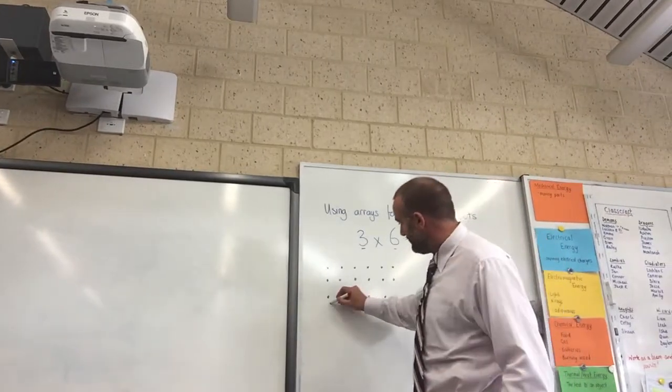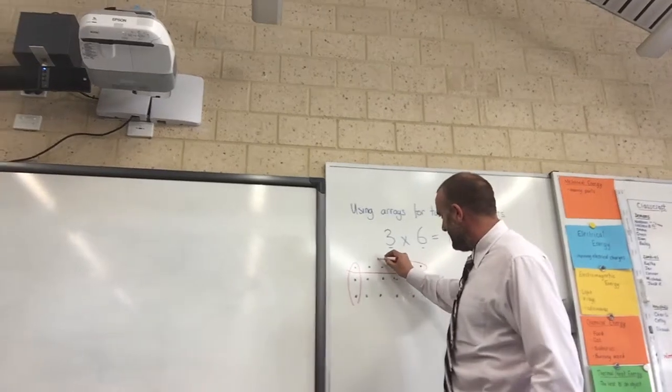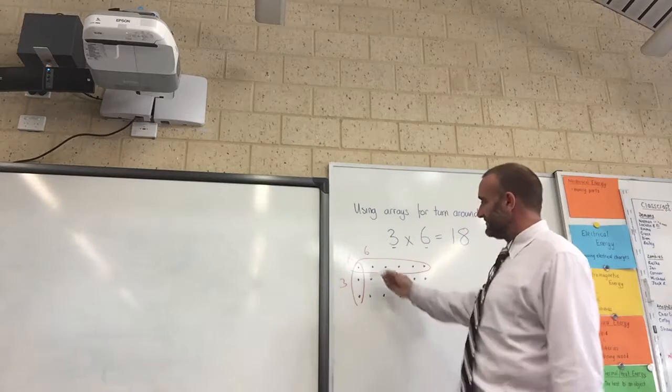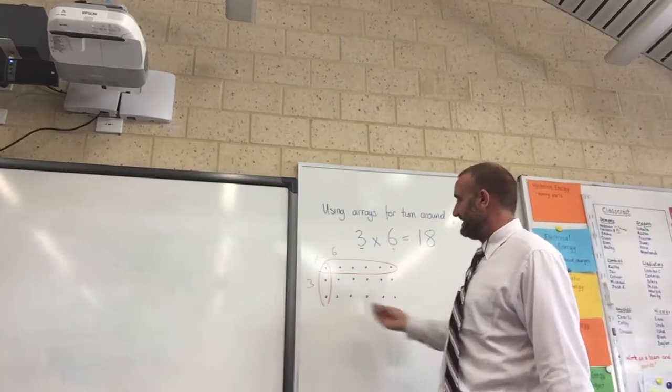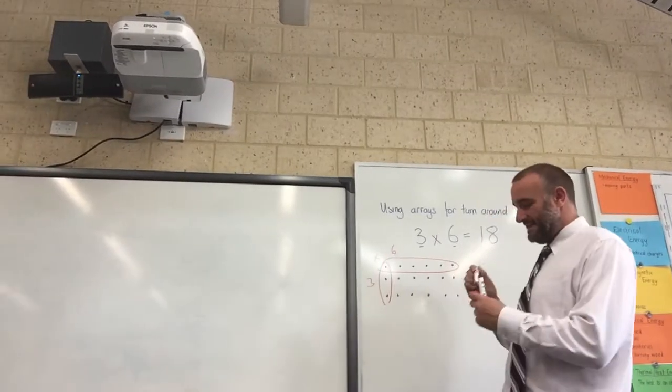And if we remember, that would be 3 multiplied by 6. So 3 times 6, and as we know, that's 18. We can count it: 3, 6, 12, 15, 18.